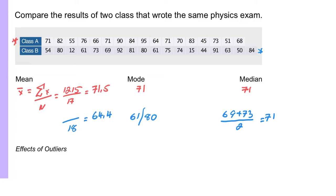So you can see that class A, their data, the mean, the mode, and the median are basically all the same number at 71. Class B is a slightly different story. We have 64 as the average while the median is the same as class A.